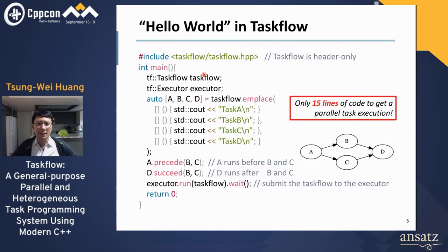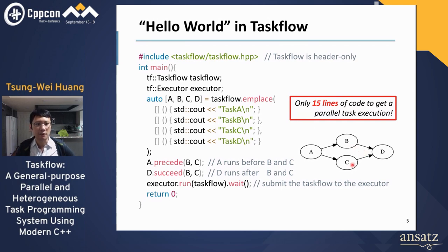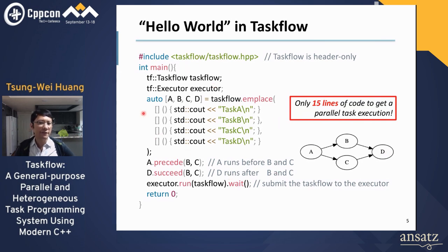Let's take a look at a hello world example in Taskflow. Suppose we want to do four things — A, B, C, D — each representing a function or a task. A has to run before B and C. D has to run after B and C. When A finishes, B and C can run in parallel. When both B and C finish, D can start. This is how it looks in Taskflow — only 15 lines of code to get parallel task execution, and this is all you need.